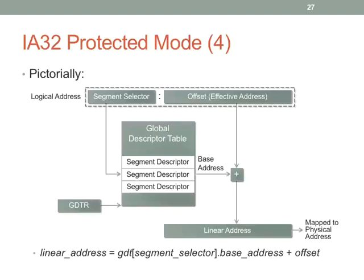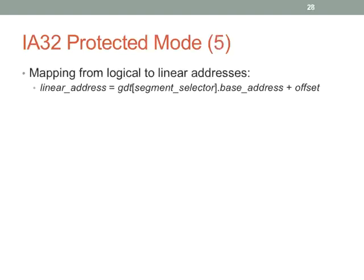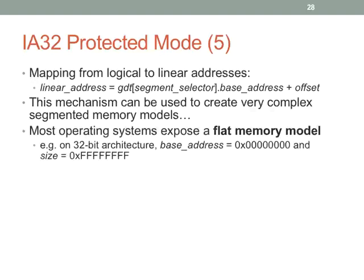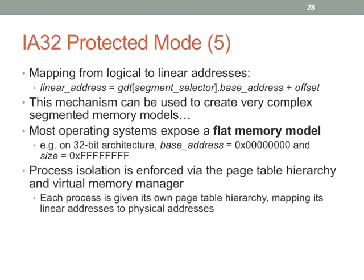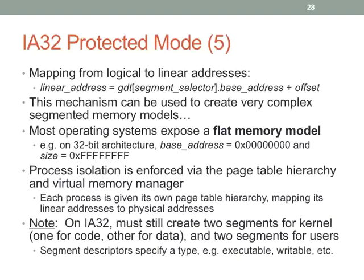To summarize pictorially: the segment selector is used to look up the segment descriptor via the GDTR, the base address plus offset gives a linear address, and that is mapped to a physical address by virtual memory hardware if enabled. We basically always use a flat memory model because it's simple — we use virtual memory to impose process isolation rather than segmentation. This will become more important when you get into the fourth project dealing with user mode versus kernel mode.